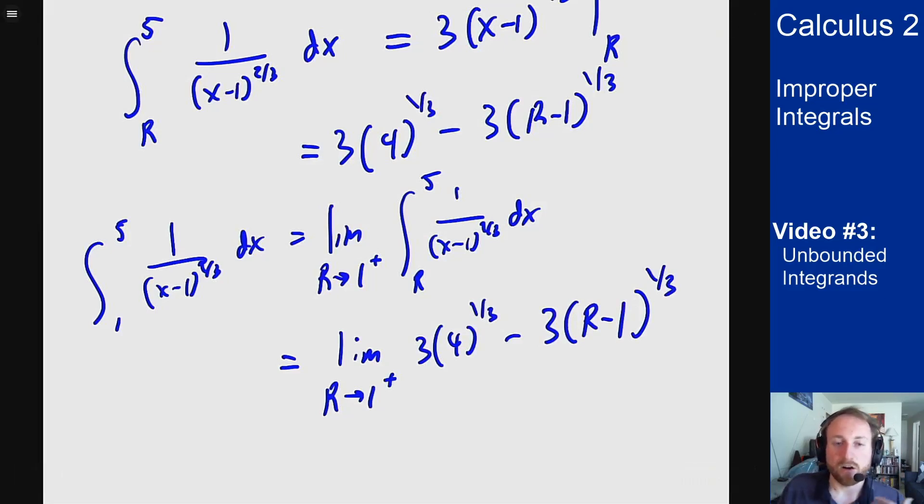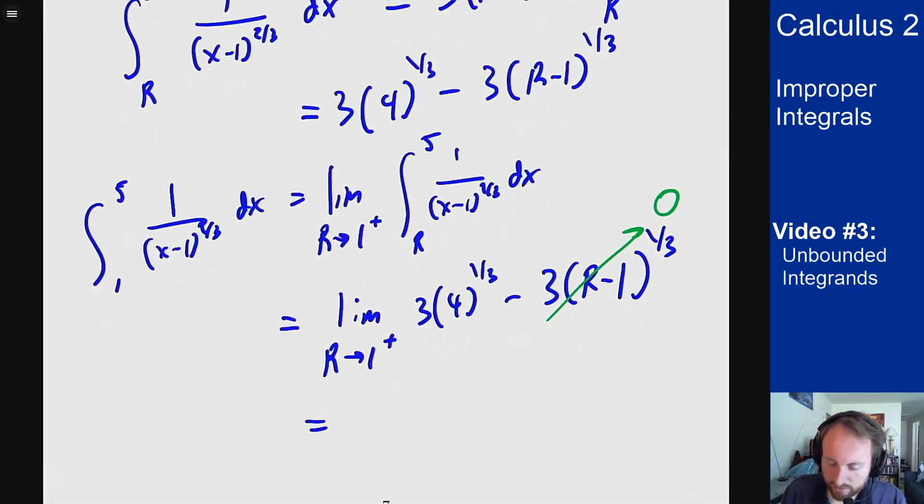And what happens if I send r to 1 here? Well I can just plug in 1 because this function is continuous at this point. I can plug in 1 and when I do, this goes to 0. That's going to mean my limit exists because I can do that limit. This equals 3·4^(1/3). So the integral converges and it converges to this limit.